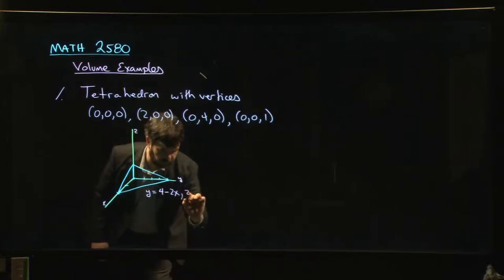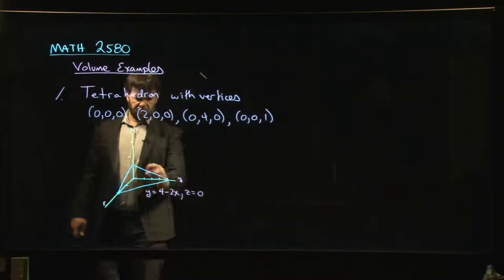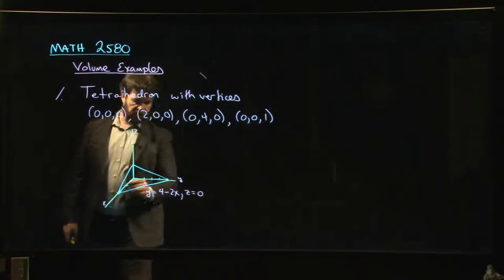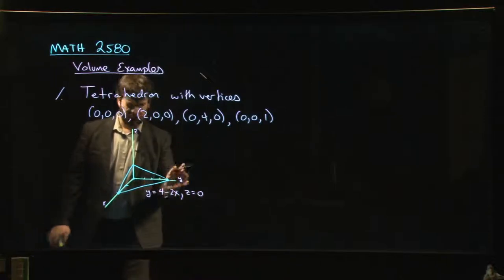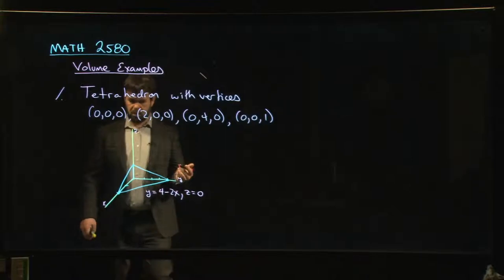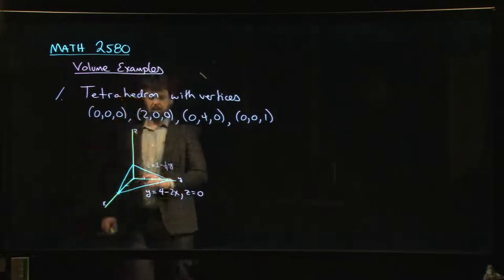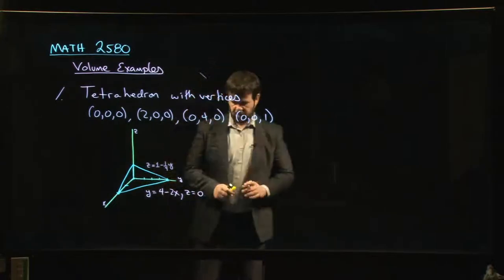And of course, this is in the XY plane, so Z equals zero along there. We could also introduce the equations for the other lines if we wanted to. So along here, for example, we could write this, we could do Z in terms of Y or Y in terms of Z. Let's say Z is equal to one minus one quarter Y. You could do it that way if you like. And we could label the other edge as well, but it's not actually that important.